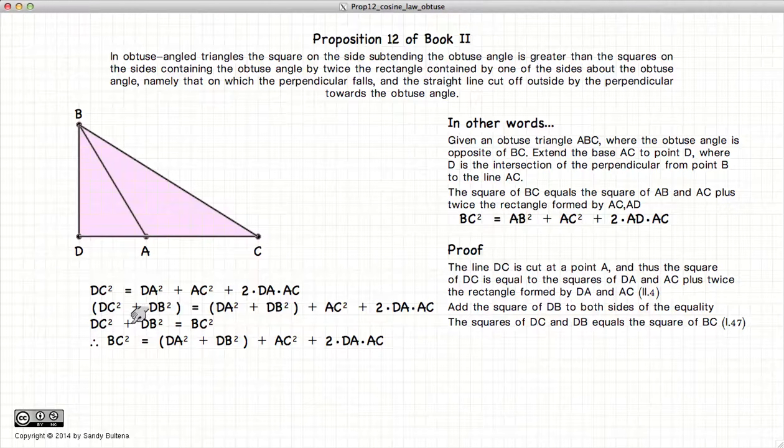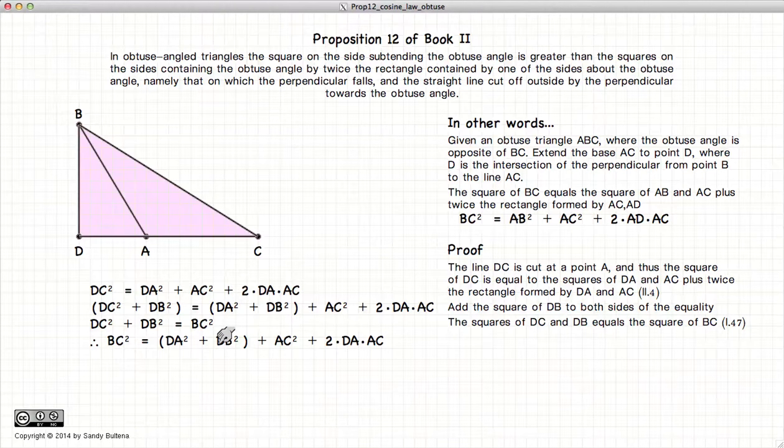So now we have this equality, but what's DA squared plus DB squared?